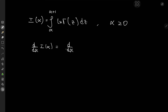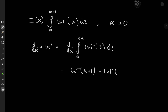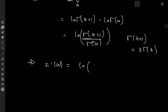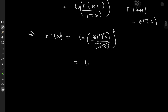So we have the derivative with respect to alpha of the integral from alpha to alpha plus one of log gamma(z) dz. By the fundamental theorem of calculus, the right-hand side is log gamma(alpha+1) minus log gamma(alpha), which equals log of gamma(alpha+1) over gamma(alpha). Using the recursion formula gamma(z+1) = z·gamma(z), this implies I'(alpha) = log(alpha·gamma(alpha)/gamma(alpha)), and with that cancellation we're left with log alpha.